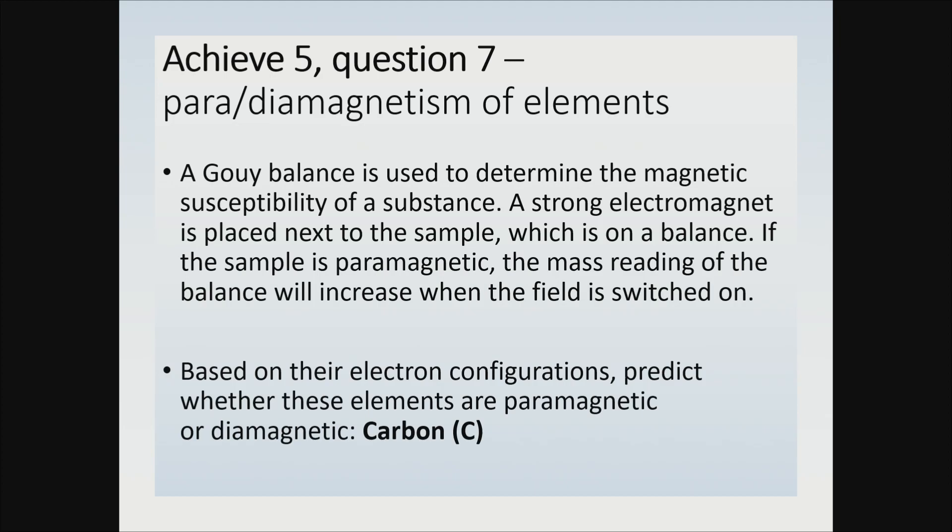So it says as follows: A Gouy balance is used to determine the magnetic susceptibility of a substance. A strong electromagnet is placed next to the sample, which is on a balance. If the sample is paramagnetic, the mass reading of the balance will increase when the field is switched on.